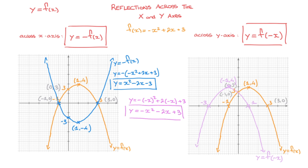We now know the transformations for reflecting a curve across the x-axis and across the y-axis. Remember: when reflecting across the x-axis, the transformation y equals negative f of x turns every single y-coordinate of the original curve into its opposite. On the other hand, when reflecting across the y-axis, the transformation y equals f of negative x turns every single x-coordinate into its opposite, reflecting the curve across the y-axis. And that's it for this tutorial.